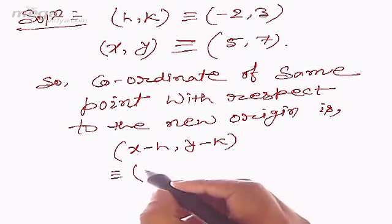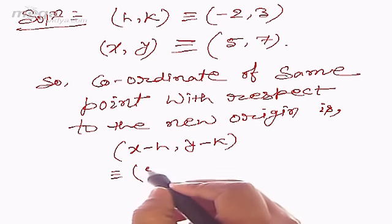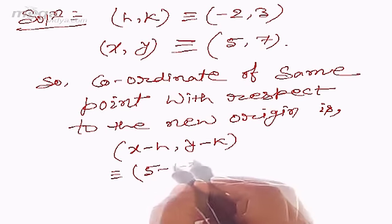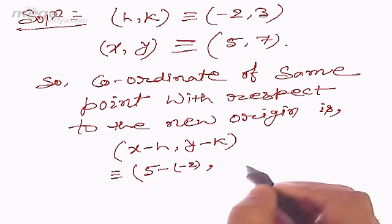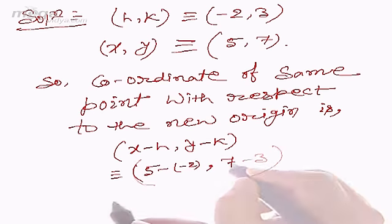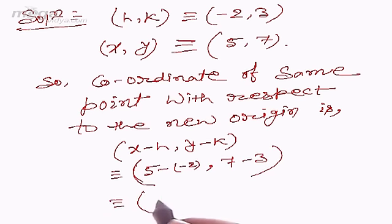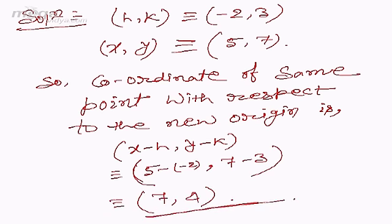Applying the formula: (5 - (-2), 7 - 3) = (7, 4). So the new coordinates are (7, 4). Now let's take another example.